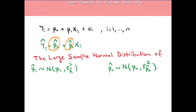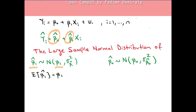Under the least squares assumptions, β₁-hat is an unbiased estimator of β₁, and β₀-hat is an unbiased estimator of β₀. The variance of each distribution is given by a specific formula.